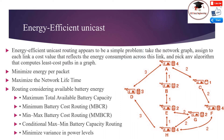Maximize the network lifetime: energy efficient transmission is at best a means to an end, and the actual end should be the optimization goal. The network should be able to fulfill its duty for as long as possible. Network lifetime, which is defined as the time until the first sensor's energy runs out, is an important performance metric in WSN. Routing considering available battery energy includes: maximum total available battery capacity, minimum battery cost routing, minimum min-max battery cost routing, conditional max-min battery capacity routing, and minimize variance in power level.